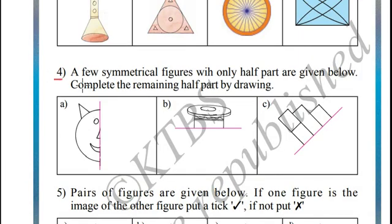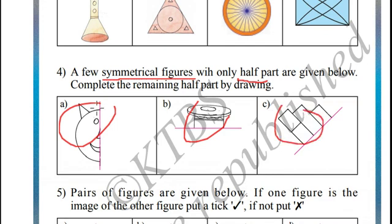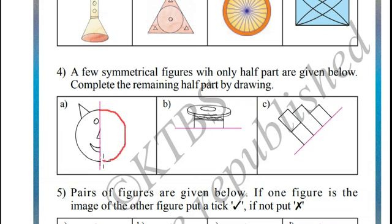Let us see example 4. A few symmetrical figures with only half part is being drawn. Complete the remaining half part by drawing it. Let us draw example 1. I will try to draw as symmetrical as possible. You can try example B and example C.